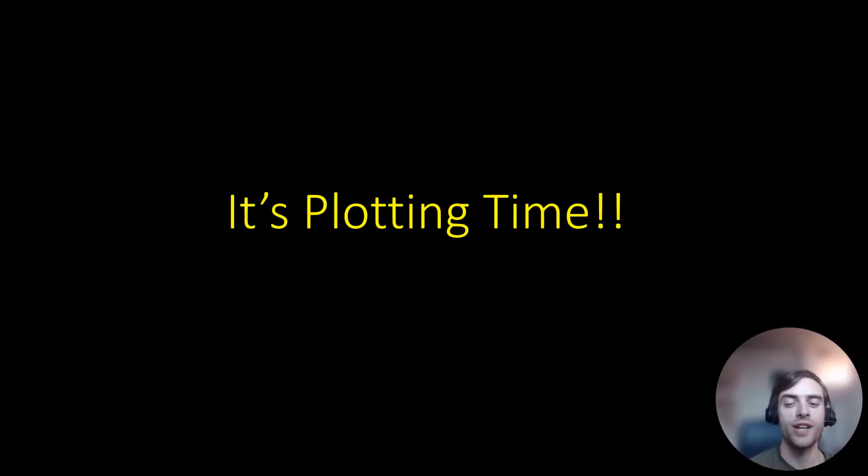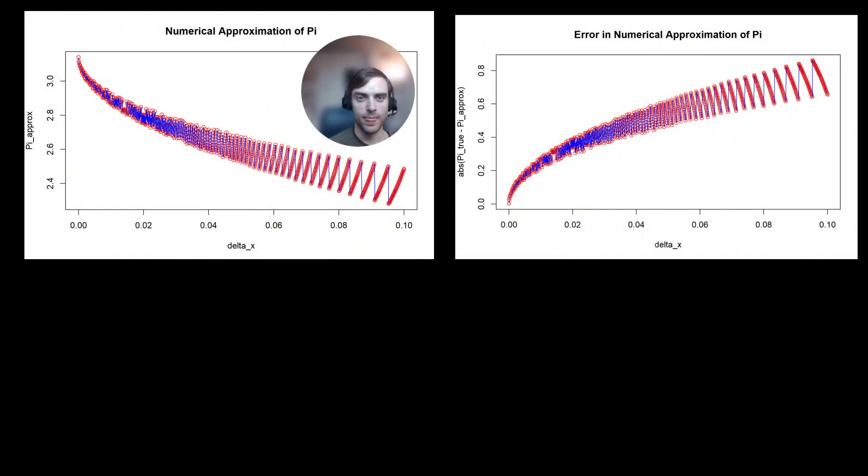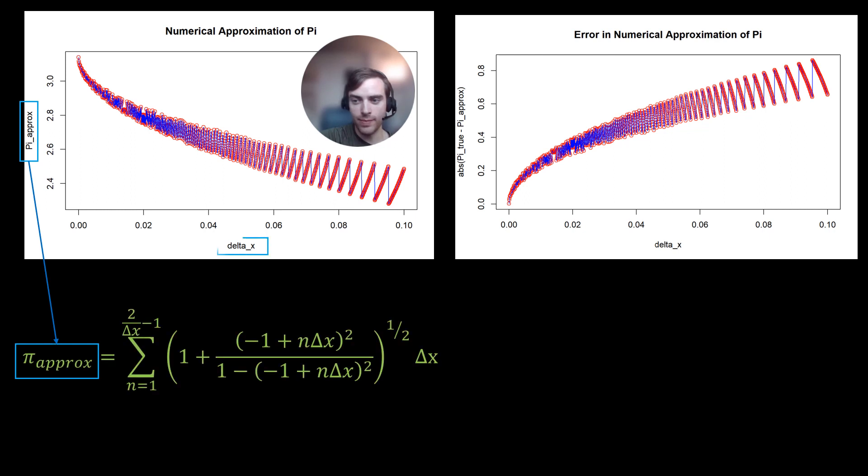It's plotting time. So now here are some plots. So for the plot to the left, it shows the approximated value of pi as a function of our step size, delta x. And as you can see, the smaller the value for delta x, the better the approximation.